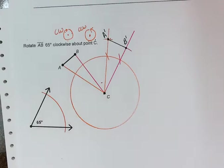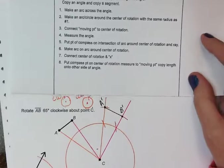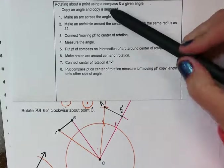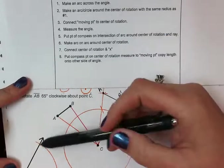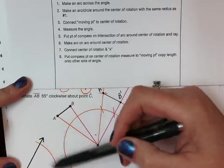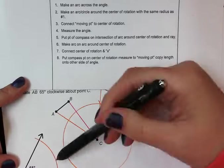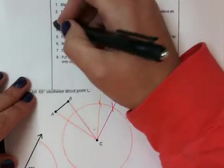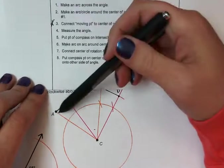So for our steps, these will be in the notes. It's copy an angle and copy a segment. Step one is make an arc across the angle. That is right here when we made the arc across the angle. Step two is make the circle with the same radius as the arc. Step three, and this again is where we start our repeats from. Step three is connect the moving point to the center of rotation. So connect A to C.